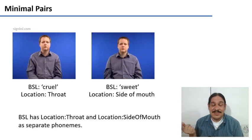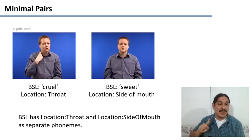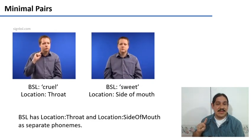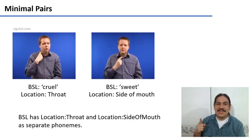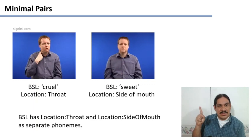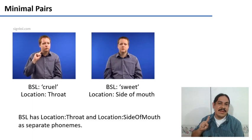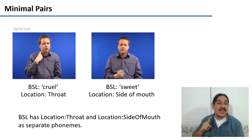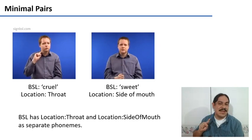Sign languages work exactly the same way. For example, on the left here we have the British sign language word cruel, and on the right we have the BSL word for sweet. As you can see, they both have the same hand shapes, one index finger pointed, they both have the same motions upwards, and they have the same rotations where you end up seeing the knuckles. However, they end in different locations. The first one has it on the throat, the second one has it on the side of your mouth.